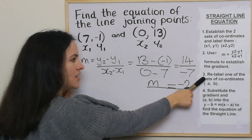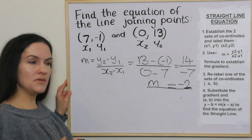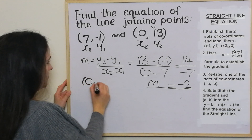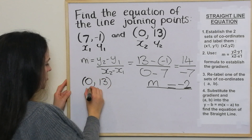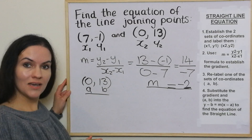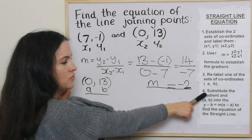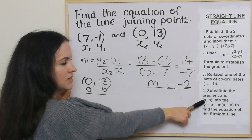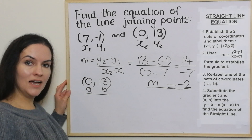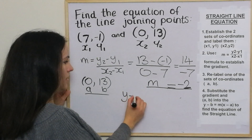In step 3, we've got to relabel one of the sets of coordinates a, b. I'm going to go with this one here: 0, 13, we'll call it a and b. So we've got a and b and the gradient m value. Now we substitute the gradient and a, b into the formula y minus b equals m bracket x minus a.